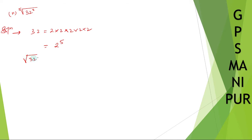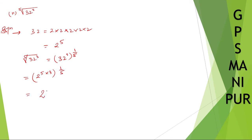The fifth root of 32 cubed can be written as 32 to the power 3, and the fifth root as 1 by 5. So we have 2 to the power 5, raised to 3, multiplied by 1 by 5. Opening the bracket: 2 to the power 5 into 3 into 1 by 5. The 5s cancel, leaving 2 cube, which is 8. So the answer is 8.